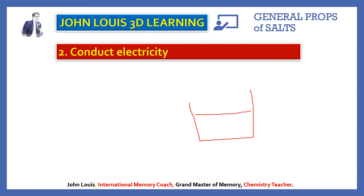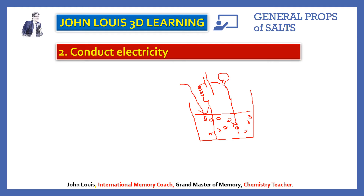If you take solid sodium chloride salt, place two electrodes in it, connect it through a power supply with a bulb in between, and switch it on, the bulb will not glow — even though it is connected to a battery it will not glow. But if you dissolve the salt by adding water, what happens?